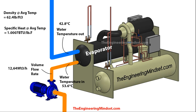Coming on to the imperial version — these values are actually from a real chiller operating at 100% maximum demand. The pump is providing water at 12,600 cubic feet per hour. The temperature of the water going in is 53.6 degrees Fahrenheit, and the water coming out is 42.8 degrees Fahrenheit. At the average temperature, the density of the water is 62.4 pounds per cubic foot, and the specific heat capacity is 1.0007 BTUs per pound per Fahrenheit.